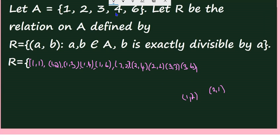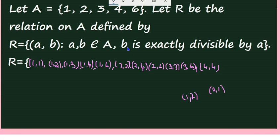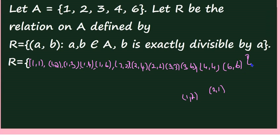Next element is 4: (4, 1) is not there, (4, 2) and (4, 3) are not exactly divisible by 4. But 4 is exactly divisible by 4, so (4, 4) is there. The next multiple of 4 is 8, which is not in A, so (4, 4) is the only element starting with 4. For 6, there is only (6, 6). These are all the elements in relation R.